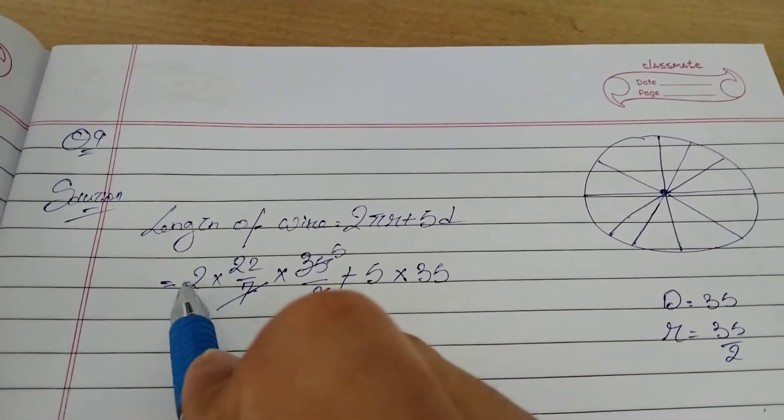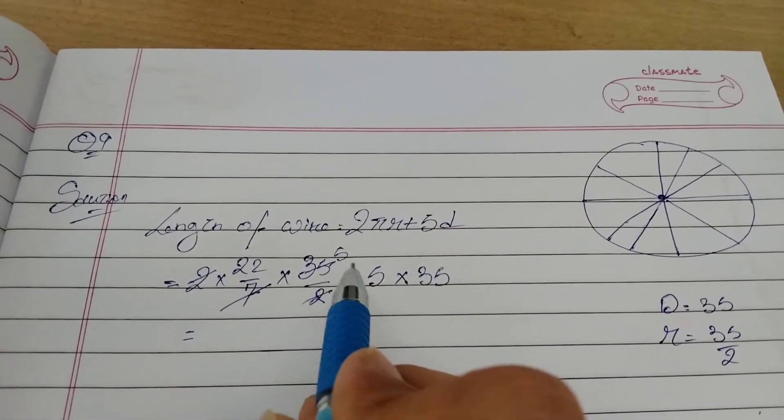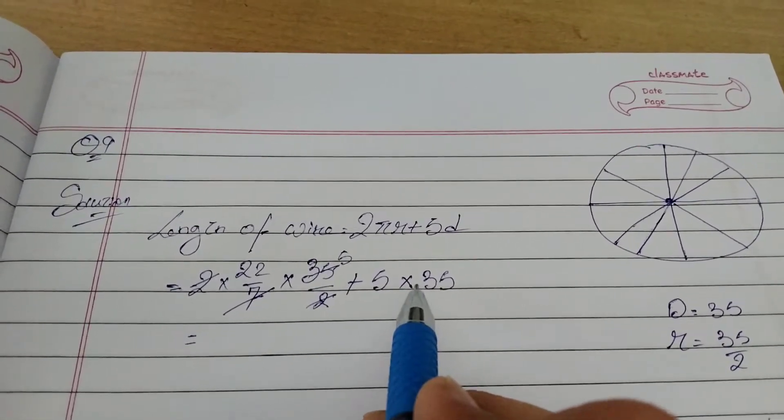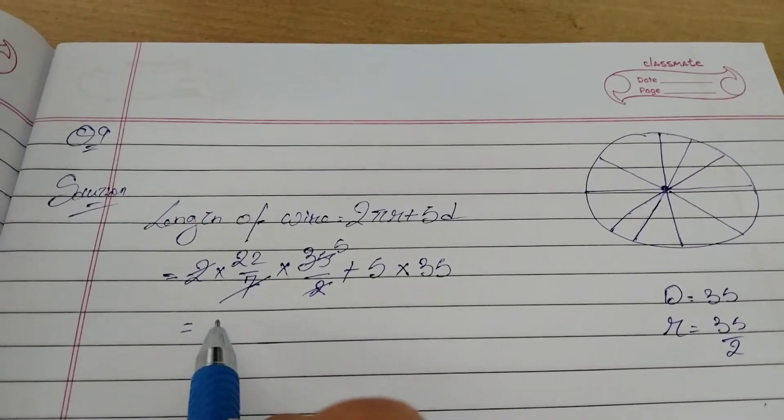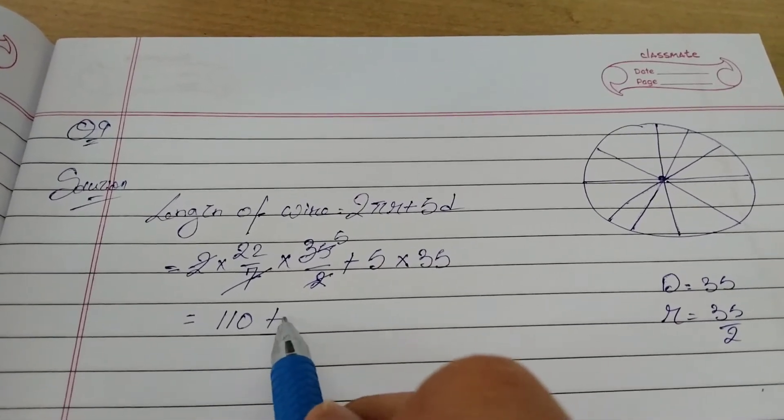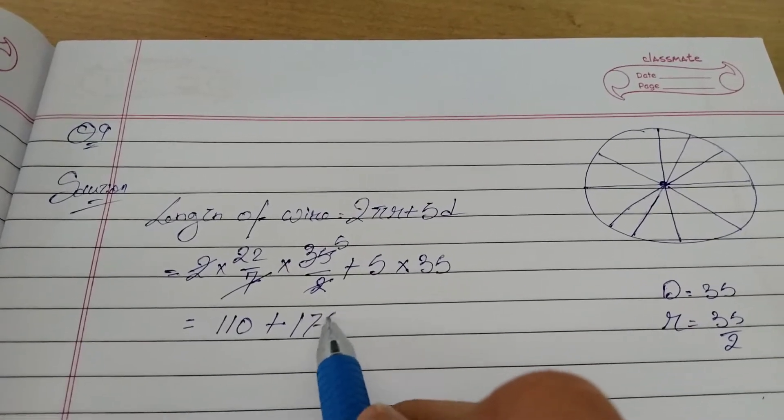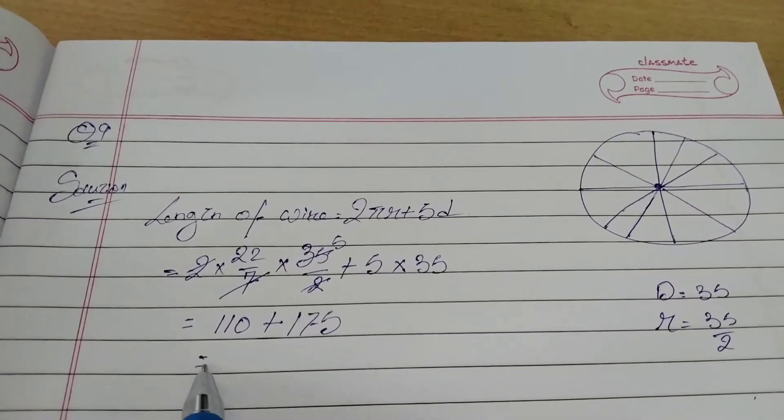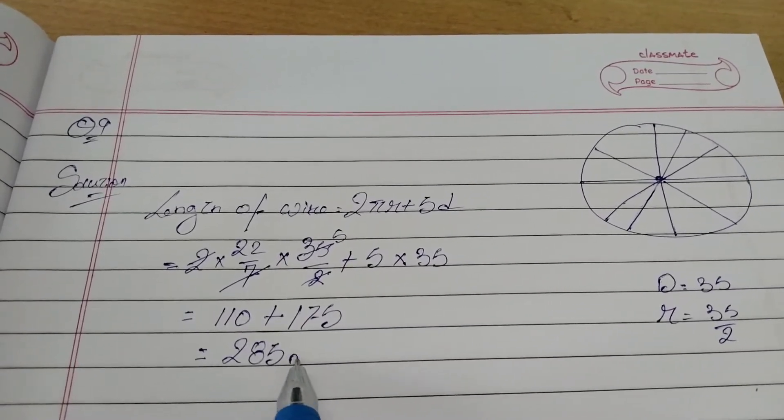2 into 2, the remaining are 22 and 5. If you multiply this and add this, okay I'll do it slowly: 22 into 5 equals 110, plus 5 multiplied by 35 equals 175. If you add these two, we are getting 285 mm.